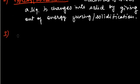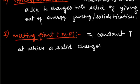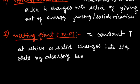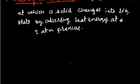Number three: melting point, abbreviated as MP. In our experiment, we observed a constant temperature at t1, t2, t3, and t4 — this is nothing but the melting point. The constant temperature at which a solid changes into a liquid state by absorbing heat energy at one atmosphere pressure is called the melting point. The melting point of ice is 0 degrees centigrade, or 273 kelvin.